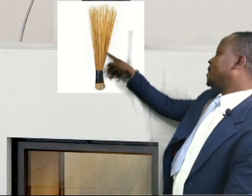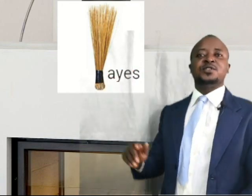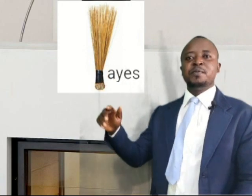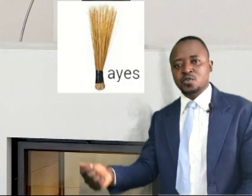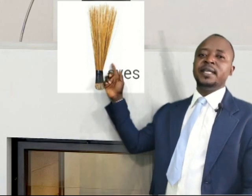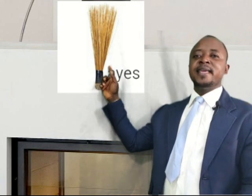The letter A goes with things in the Kom dialect like IES. As you can see on the board here, we have IES, which in English is the broom — the broom that is used to sweep. That is what we call in the Kom dialect IES.